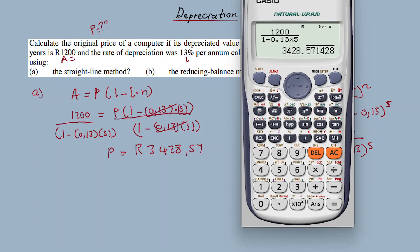At grade 11, you don't have the tools to calculate the value of n. To calculate n you need to apply something called logarithms, which the grade 11 scope doesn't cover. You need to know how to calculate A, P, and i from the formula. Calculating n will be covered in grade 12 where you'll be learning about logarithms.